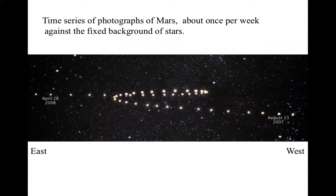This picture shows the phenomenon of the motion of the planets against the background stars. It's photographs of Mars taken once a week over a period of about eight months, showing the gradual progression of Mars from west to east — so it's moving eastward. Then it slows down, turns around, and moves westward in retrograde motion, and then resumes its eastward motion, ending at the end of April there.